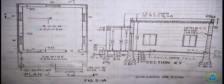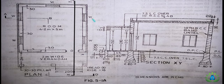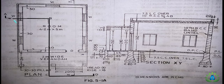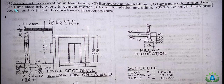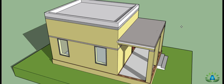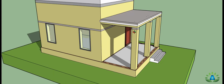Today we are going to do the estimation of a building having a single room. In this question we also have the veranda portion as well as the parapet walls. When we cut this plan from the cutting plane in XY and observe this building from this side, we will get this section at XY. When we cut from the cutting plane ABCD, we will get the elevation of this house. In this question we have the pillar foundation, and today we are going to do the estimation for earthwork in excavation, earthwork in plinth filling, lime concrete in foundation, first class brickwork in cement mortar, 2.5 centimeter thick DPC, and first class brickwork in superstructure.